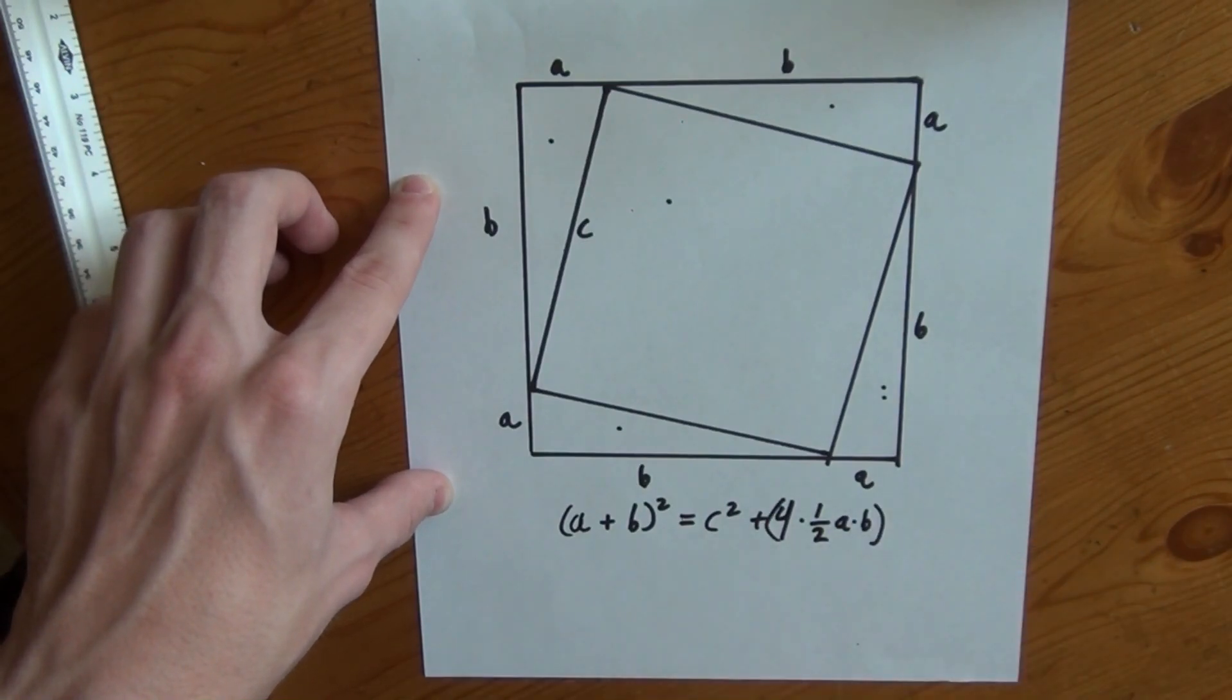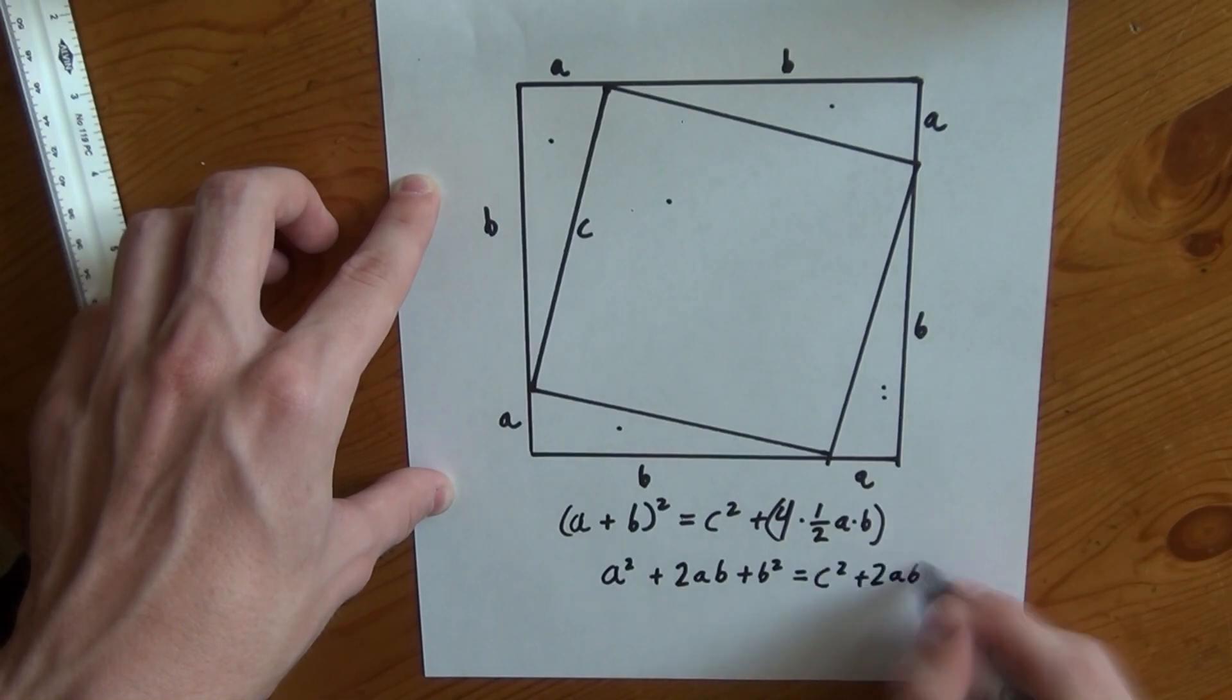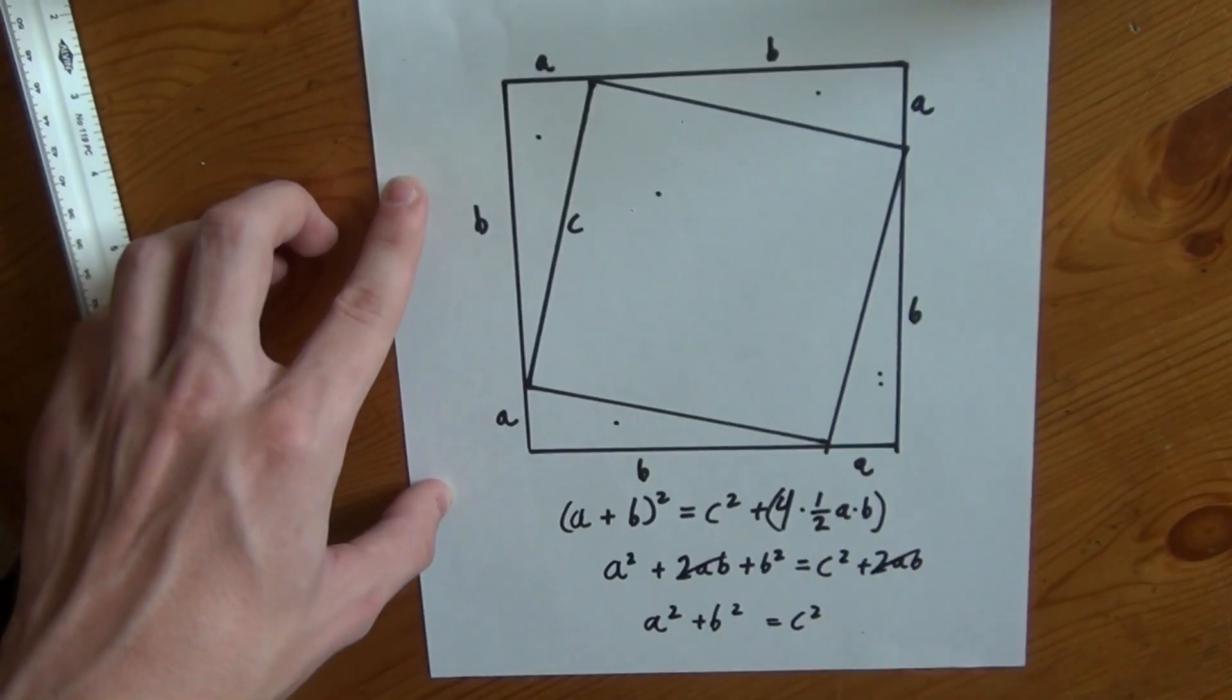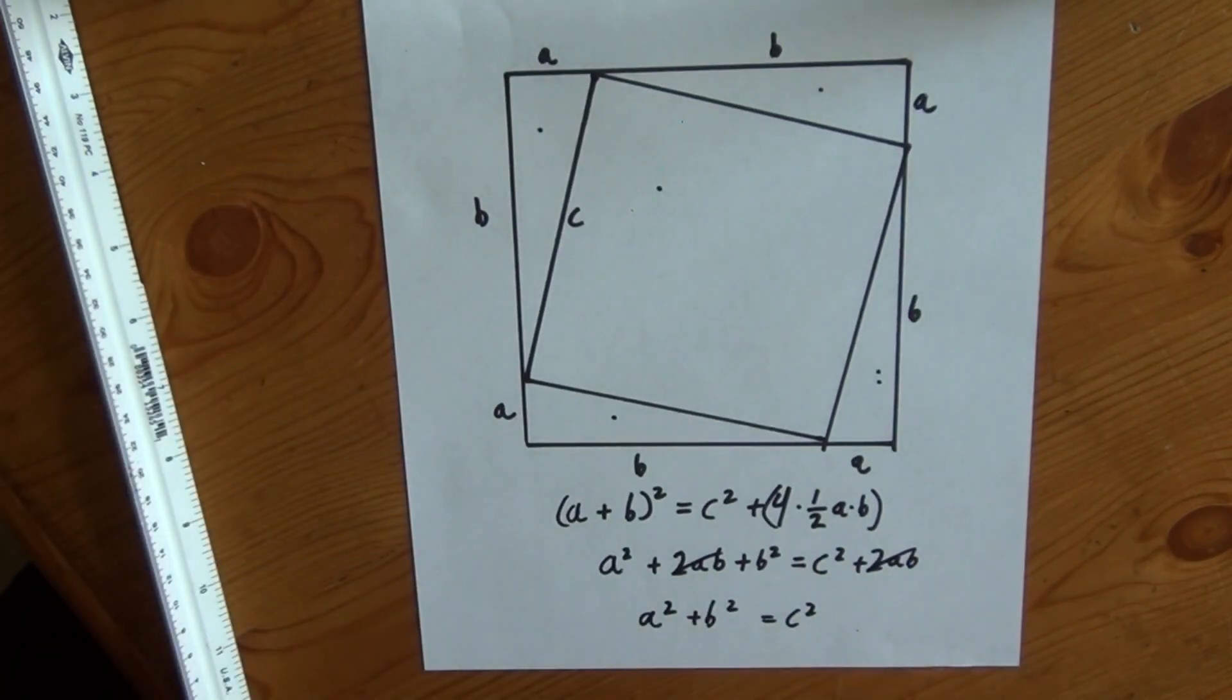Now what we can do is just simplify this down. And one more step of simplification because those two will cancel. And there you have it: A squared plus B squared equals C squared.